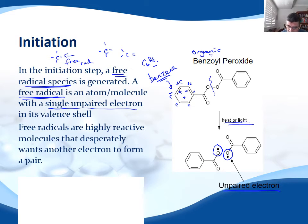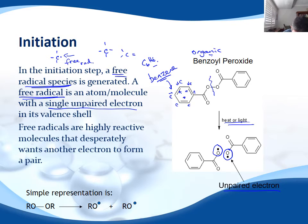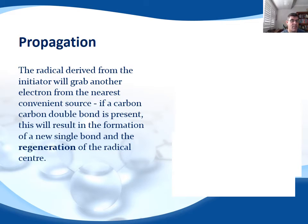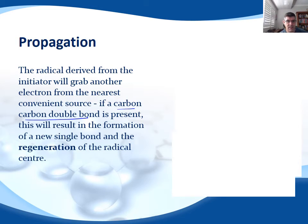Here is the unpaired electron, and that's what's going to interact with our monomer unit. The initiator can be represented as R — just an organic chain of any length. The critical bit is that there is an oxygen-oxygen bond, and when that breaks under heat or light, we get an oxygen free radical. Because free radicals are highly reactive, they desperately want another electron to form a pair and fill the octet. So the radical will grab an electron from the nearest convenient source — a carbon-carbon double bond, which has a very high electron density — forming a single bond between the two carbons and regenerating the radical center.